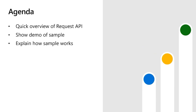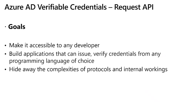Let's talk about the request API. The request service REST API — why did we build that? So that it is easy for developers to build applications. You can use this request API to build applications that can issue and verify verifiable credentials from any programming language that you are using. This new API will give you an abstraction layer so you don't need to worry about the complexities of protocols and internal workings. Just onboard the Azure AD verifiable credential service, use your platform of choice, bring in any programming language, and you can get started.